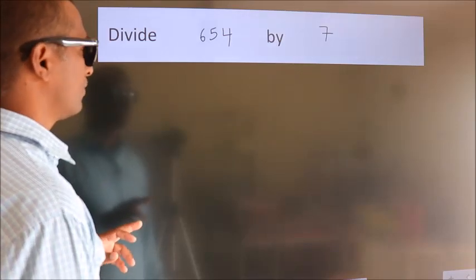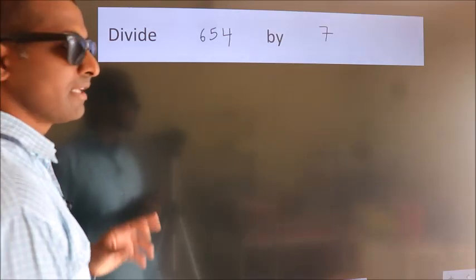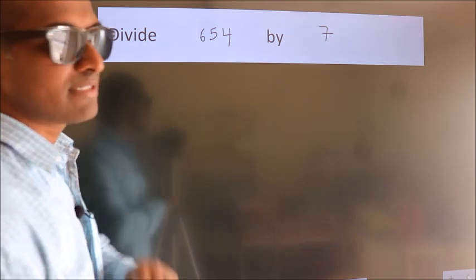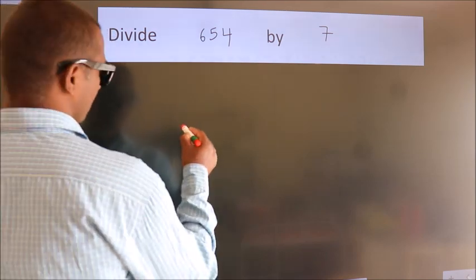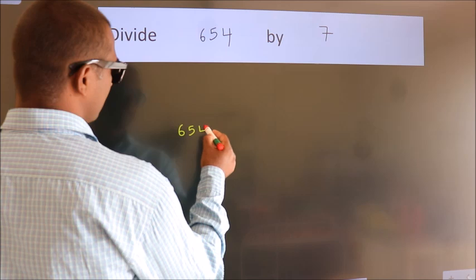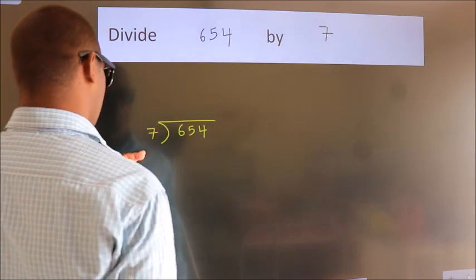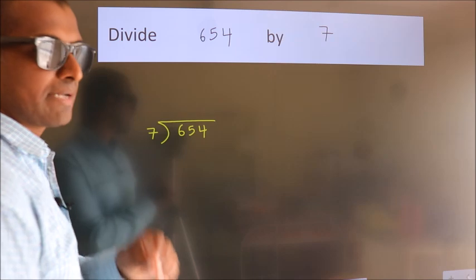Divide 654 by 7. To do this division we should frame it in this way. 654 here, 7 here. This is your step 1.